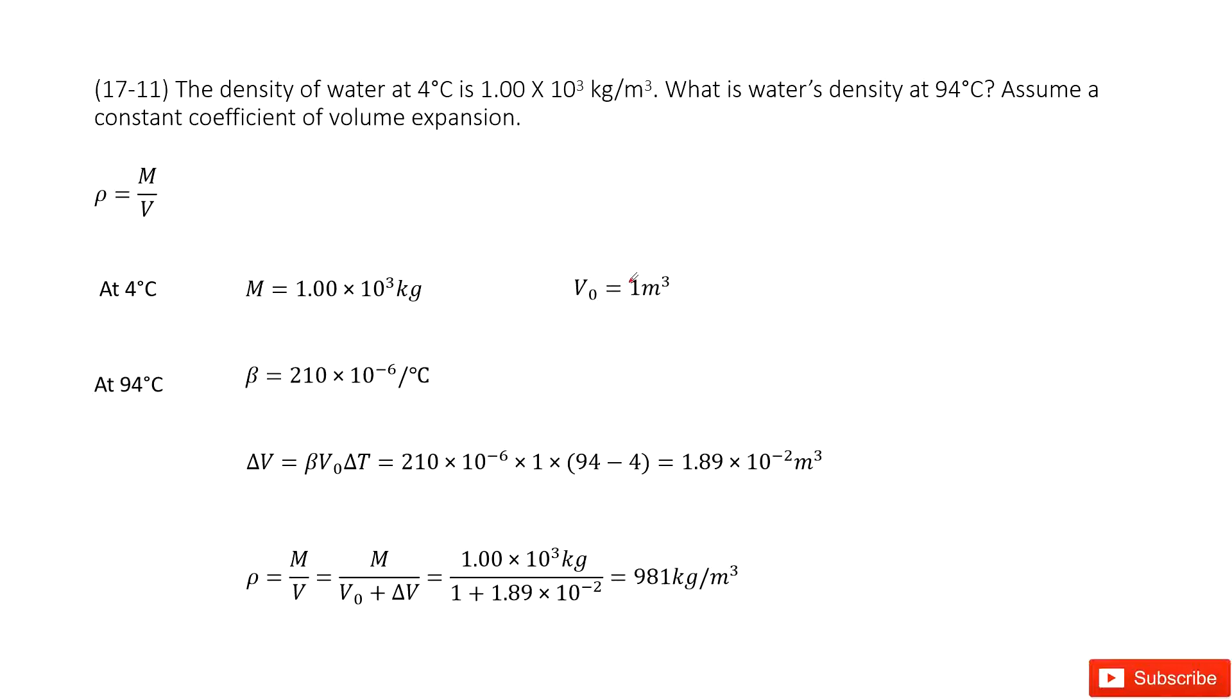We can see in these problems we need to do something with the water. There we find the minimum density for water is 1.00 × 10³ kg/m³. The temperature for this case is 4°C. Now, what is the water's density at 94°C?